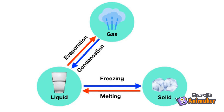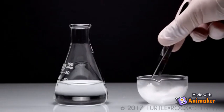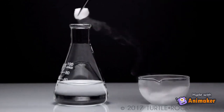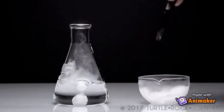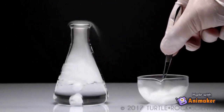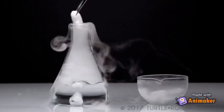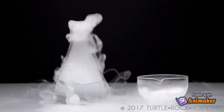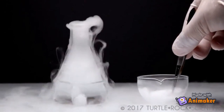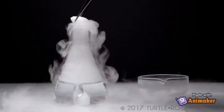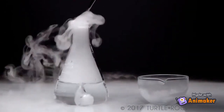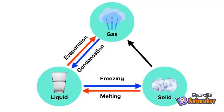Believe it or not, a solid can turn directly into a gas without ever having to be a liquid. This happens with dry ice, which is solid carbon dioxide. If you drop it in some water, you can see that the carbon dioxide ice is turning directly into a gas — it's never becoming a liquid. Those solid chunks are switching directly into a gas. This process, where a solid goes straight to a gas, is called sublimation.